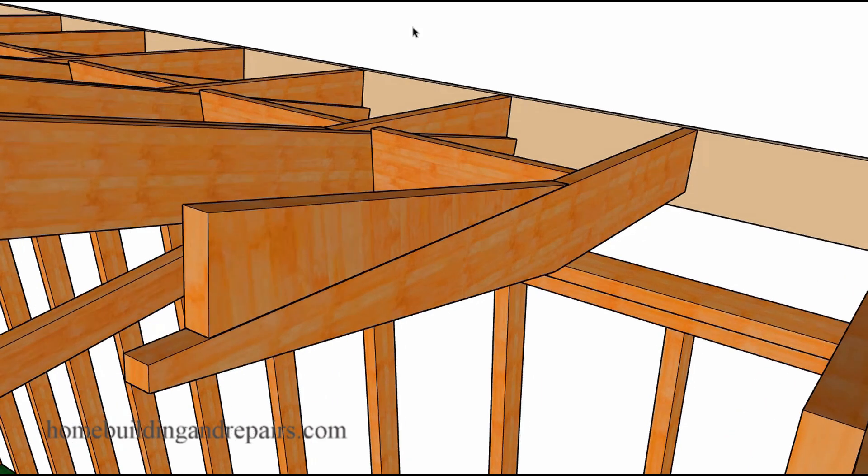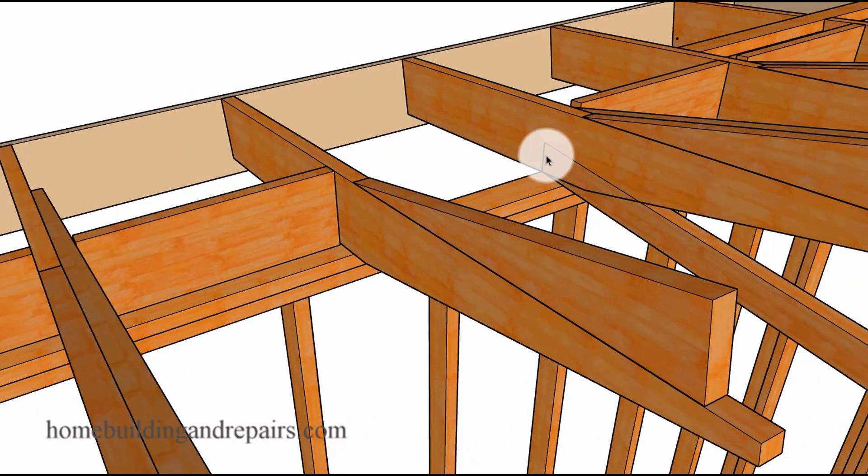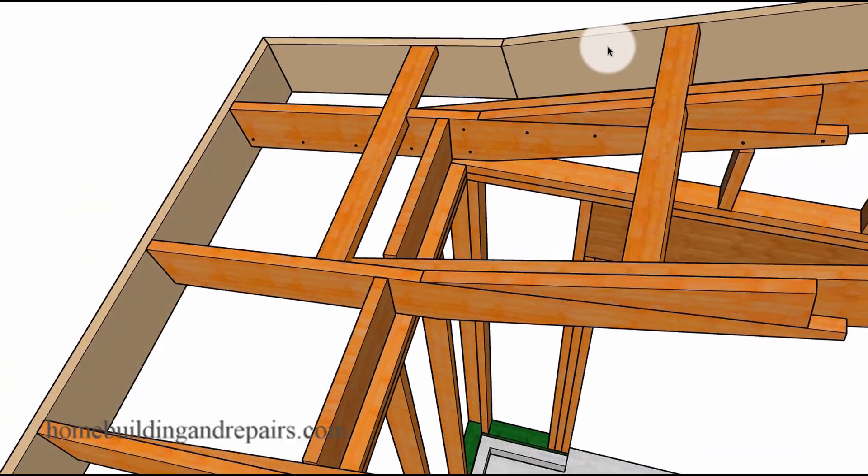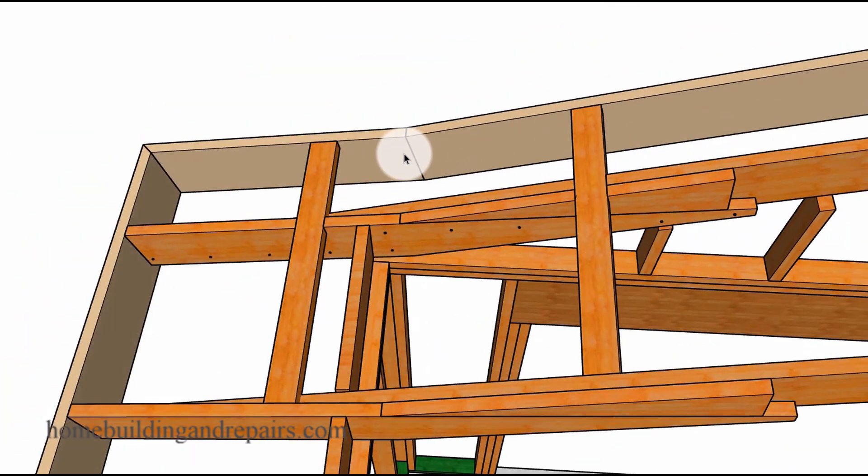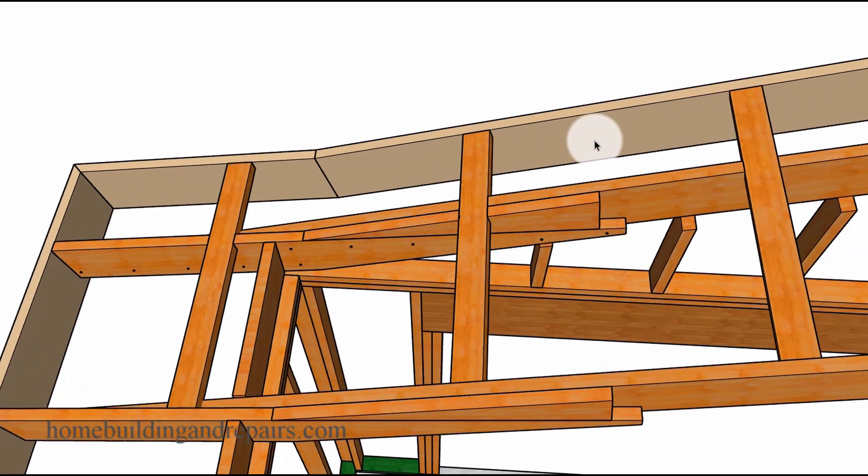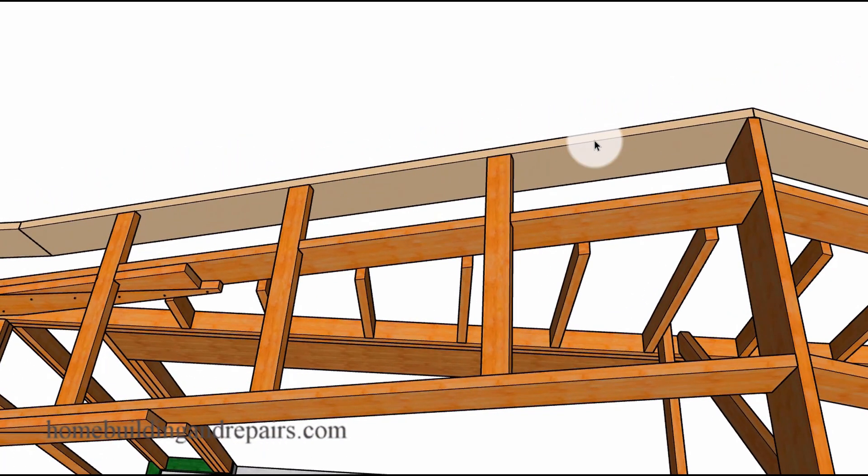Next up let's take a look at the other side so I can show you where the rafter ties are going to be in the way here. So make sure you install them where they're not going to be in the way. Something like this might need a mending plate or a flat piece of metal, maybe even a strap to prevent these boards from twisting or separating somehow.